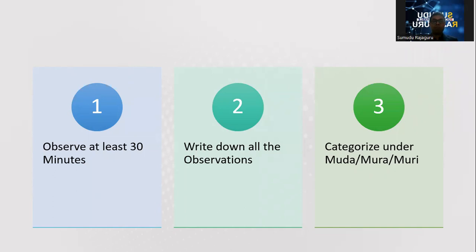After we complete the observation, we have to go to a quieter place — maybe your office area. Then take a rough sheet and write down all the observations you observed on the floor, by memorizing them. There is no particular order; just whatever things come into your mind, write them down on the paper.